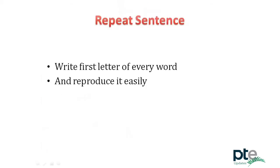In repeat sentence, a useful strategy is to write the first letter of every word. For example, if they say 'I'm going to the train station,' write: I, m, g, t, t, s. This way you can easily memorize the sentence and reproduce it. Don't try to write the whole sentence — this will divert your attention and you won't be able to memorize it. Also try to understand what message the speaker is conveying so you can reproduce it more easily.